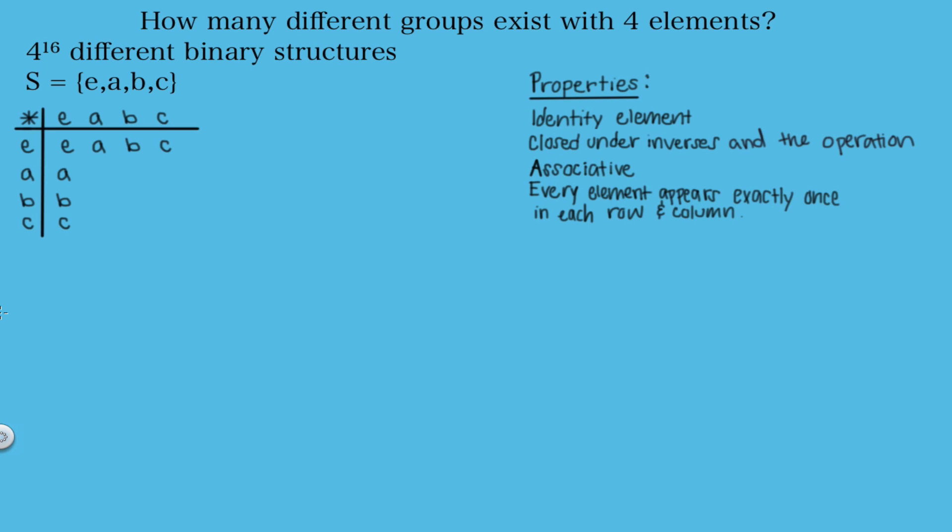So now with this last property in mind, let's go back and try to finish this binary operation table. In this spot here, we can't have an A since we already have an A in this column and an A in this row. So we can either put an E, a B, or a C. Let's go ahead and put an E and see what happens. So since we have an A and an E in this row, we need a B and a C to complete it.